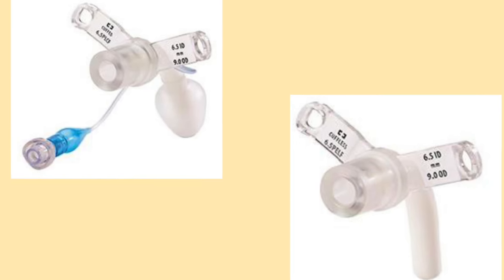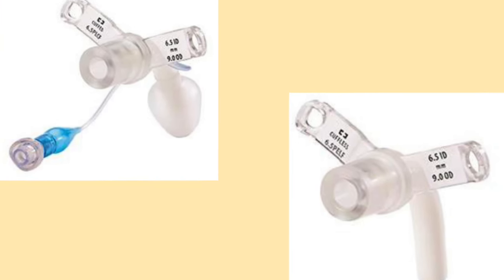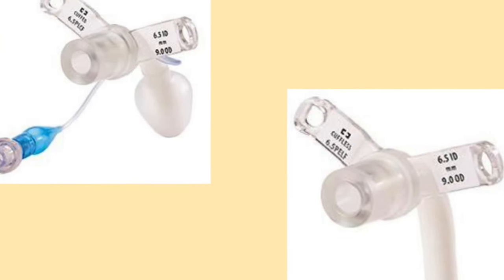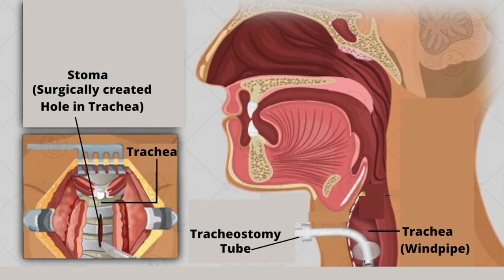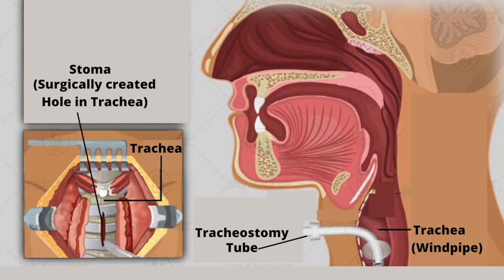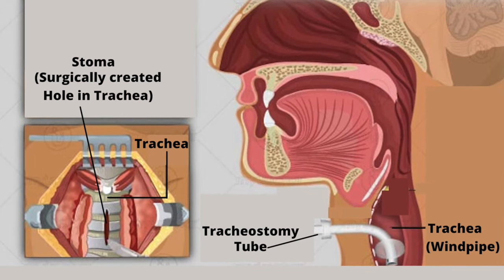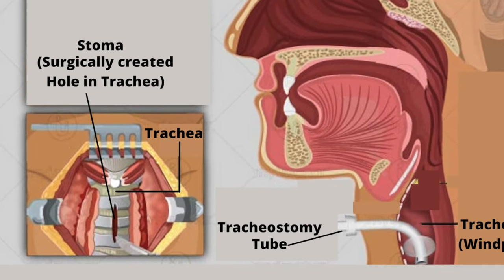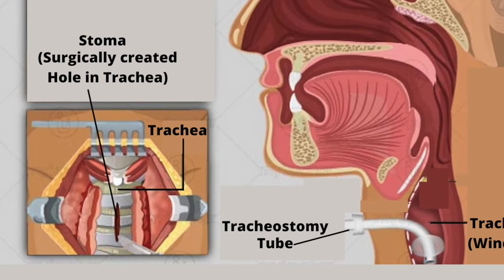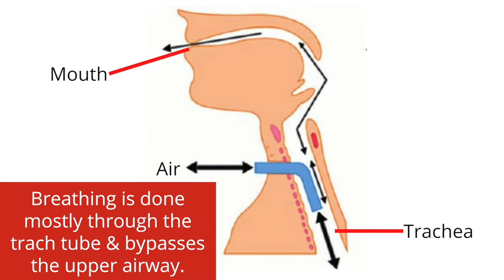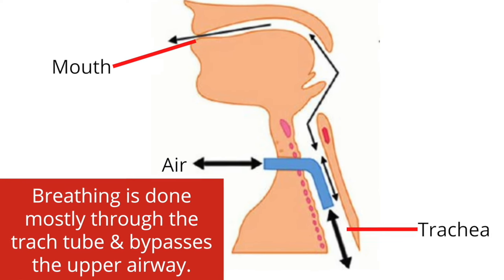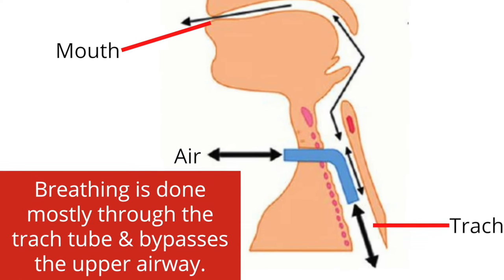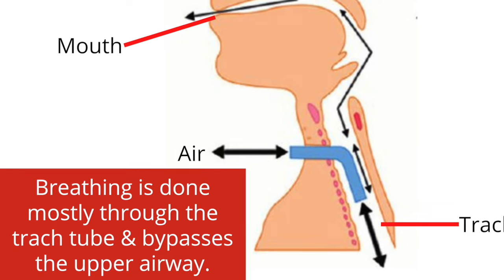A tracheostomy tube is a medical device which acts as an artificial airway. It is inserted directly into the trachea through a surgically created hole called a stoma. Breathing is done mostly through the tracheostomy tube and bypasses the upper airway.